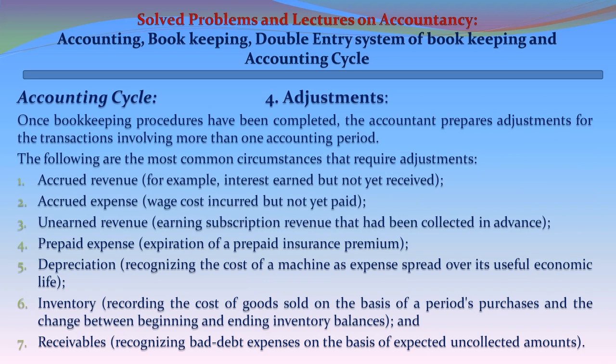Step 4 - Adjustments: Once bookkeeping procedures are completed, the accountant prepares adjustments for transactions involving more than one accounting period. The most common circumstances requiring adjustments are: 1. Accrued revenue — interest earned but not yet received. 2. Accrued expense — wages cost incurred but not yet paid. 3. Unearned revenue — subscription revenue collected in advance. 4. Prepaid expenses — expiration of a prepaid insurance premium. 5. Depreciation — recognizing the cost of a machine as expense spread over its useful economic life. 6. Inventory — calculating cost of goods sold based on a period's purchases and the change between beginning and ending inventory balances, and receivables — recognizing bad debt expense based on expected uncollected amounts.